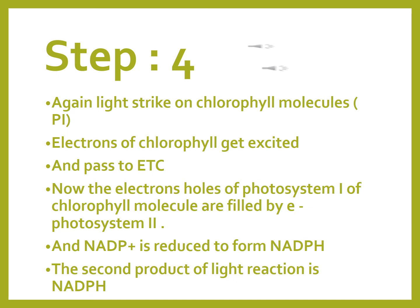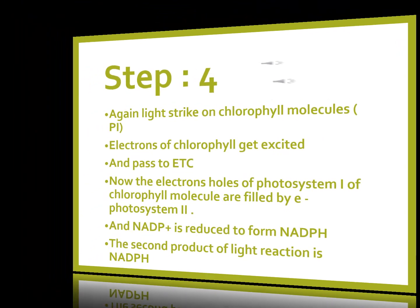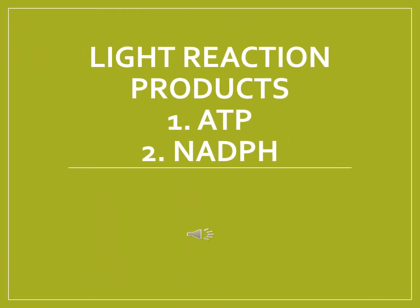So the second product of light reaction is NADPH — the first product is ATP and the second one is NADPH. NADPH stands for nicotinamide adenine dinucleotide phosphate. So there are two products of light reaction: number one is ATP, and the second one is NADPH.